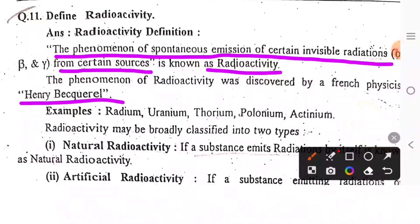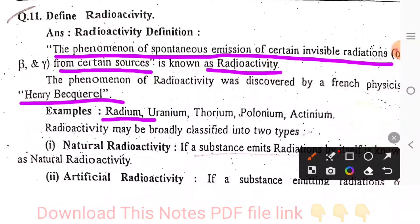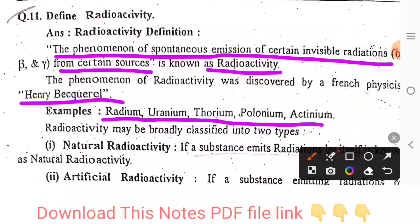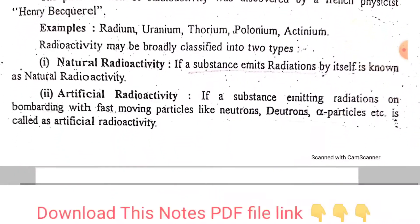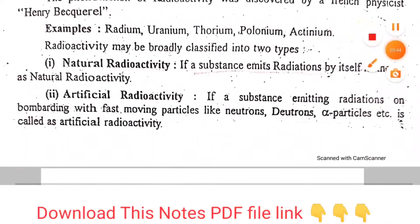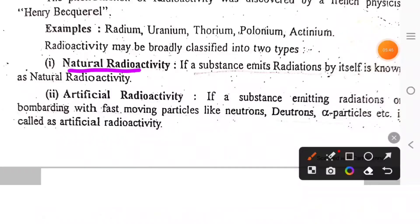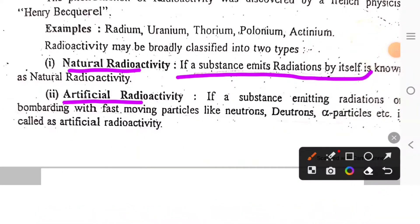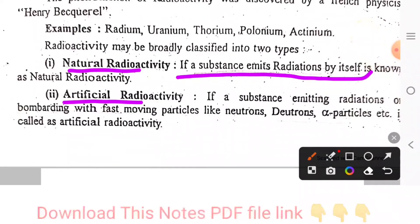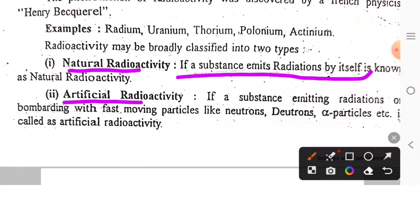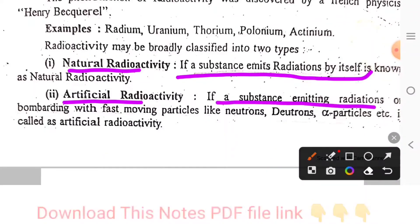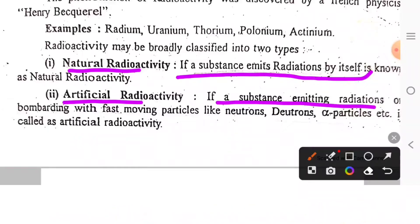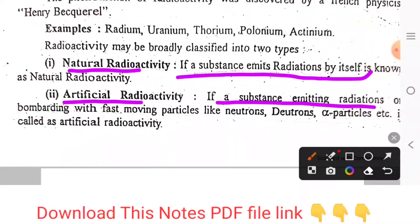The radioactive elements are radium, uranium, thorium, polonium, and actinium. There are two types of radiations: natural radiations and artificial radiations. Natural radiations are added to a natural source and emit radiation. Manufactured substances are added to artificial radiations.